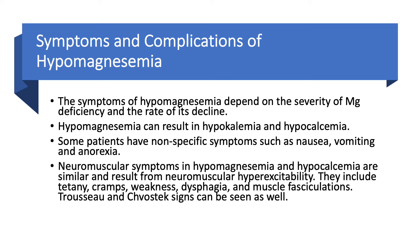What about symptoms and complications of hypomagnesemia? The symptoms depend on the severity of hypomagnesemia. When magnesium is below 1.2 mg per deciliter, you are going to have more symptoms, and it also depends on how fast magnesium dropped. It is very important to know that low magnesium can cause low potassium and low calcium. We said magnesium blocks the ROMK channel, so when you have low magnesium, potassium is going to be excreted more in the urine, causing hypokalemia.